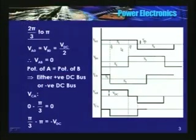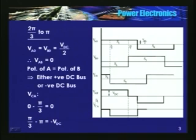Va0, Vb0, Vc0 are all square waves of Vdc/2, because the voltage is drawn with respect to the centre point of the DC link. Whereas the magnitude of line-to-line voltage Vab, Vca, or Vbc is the full DC link voltage. The magnitude of the line-to-line voltage equals the DC link voltage, but in each half cycle the magnitude is Vdc for only 120 degrees; for the remaining 60 degrees it is zero.